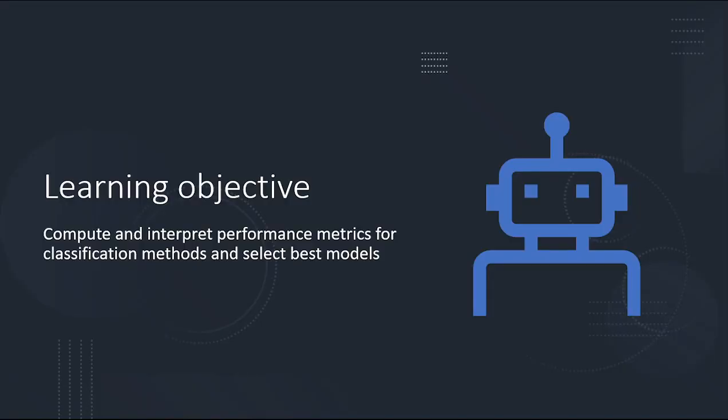This section is about looking specifically at how to assess the performance of classification. It doesn't matter what method you're using — you split data into train and test, and you can do this for decision trees, logistic regression, or KNN. Evaluating model performance is something that's common to all classification methods.